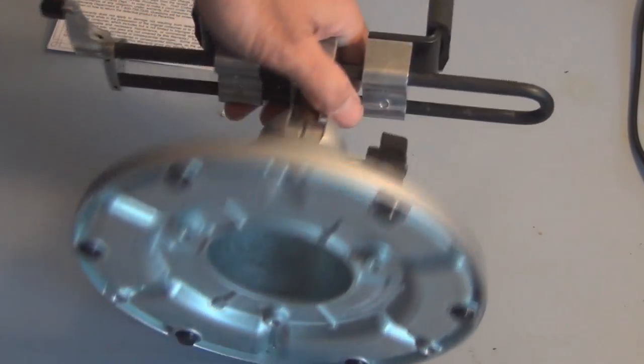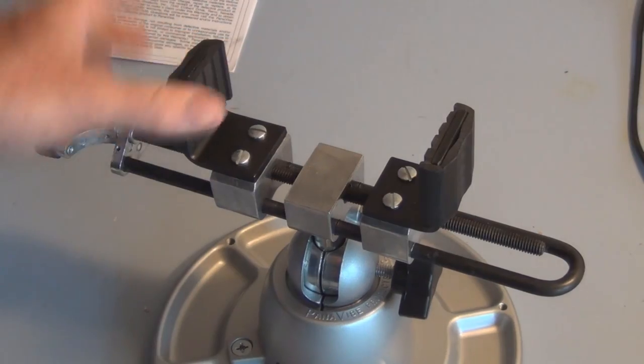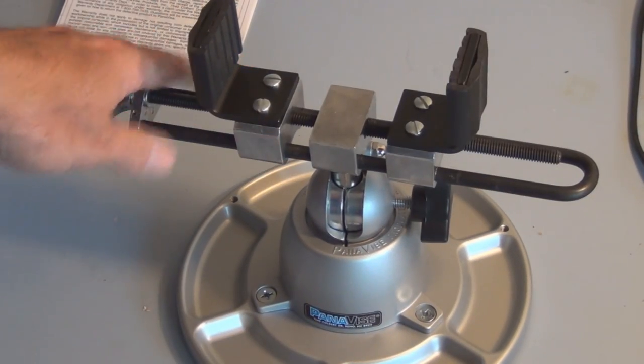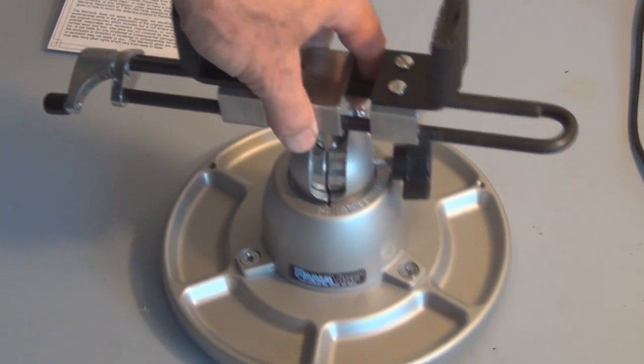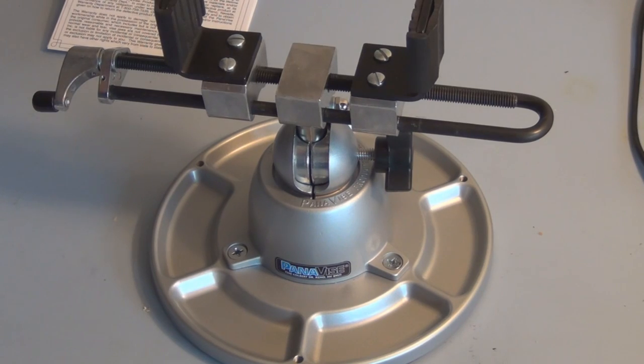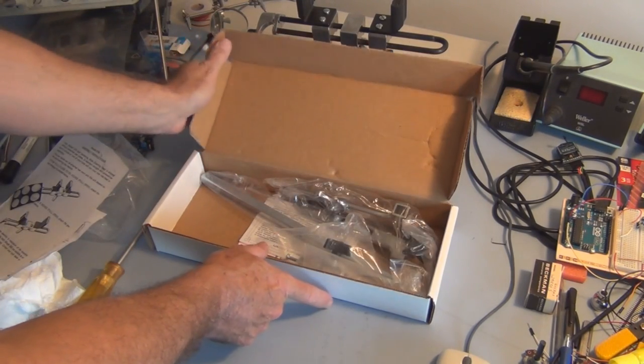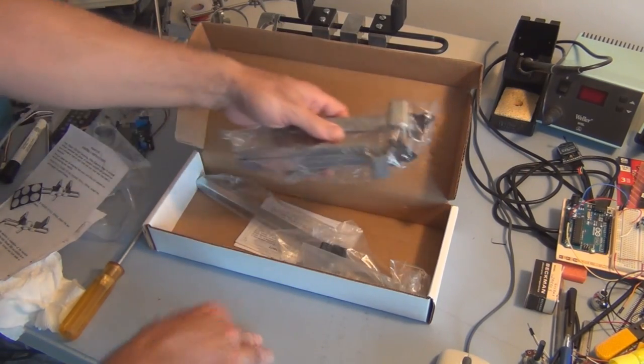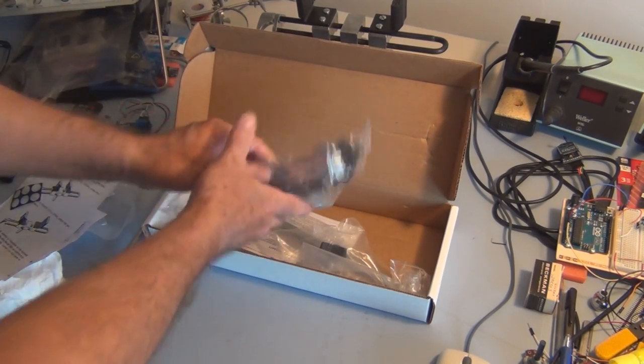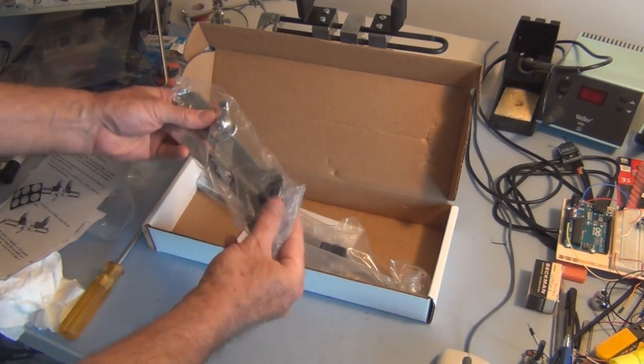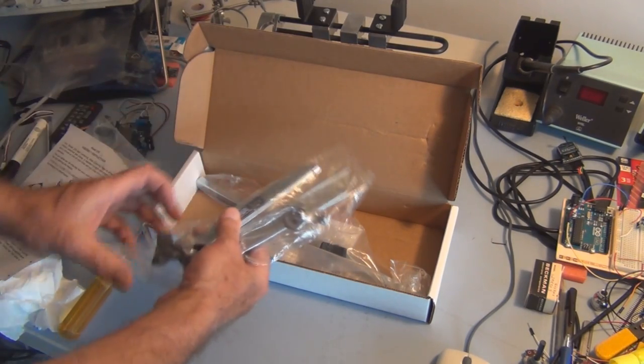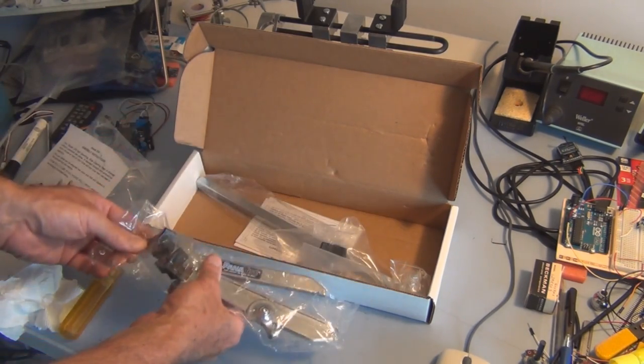Let's take a look at the circuit board holder now. The reason I purchased this is I do have a circuit board that's 12 inches wide that this is going to be able to hold onto as I solder the components to it.